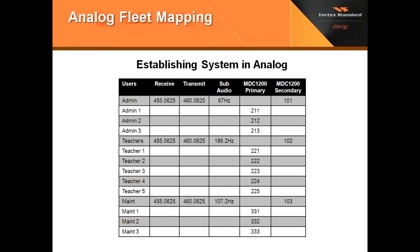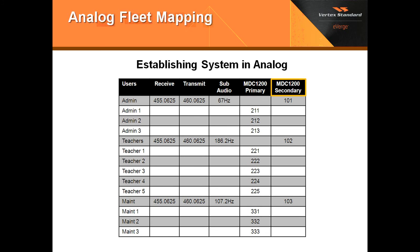Now we'll go ahead and fleet map this. The users are listed first by group, then by the individuals of that group. Our first group is admin — admin one, admin two, admin three — and so on for teachers and maintenance. We have the transmit and receive frequency of our repeater for each group, and we're going to subdivide each group using sub-audio. For this exercise, we're going to use CTCSS, and we're now going to use MDC-1200 to assign individual IDs to each user, and MDC-1200 secondary for your groups.